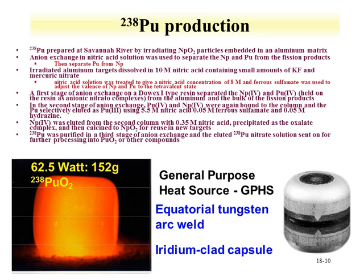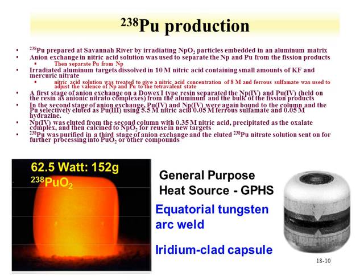The plutonium-238 was purified in a third ion exchange stage, eluted as nitrate, and sent for further processing into dioxide—generally by precipitating the oxalate and thermally treating it. The 150-gram plutonium dioxide source produces a little over 60 watts. These are welded into tungsten-iridium clad containers and can be used for general purpose heat or to produce electricity, hence they are called general purpose heat sources.